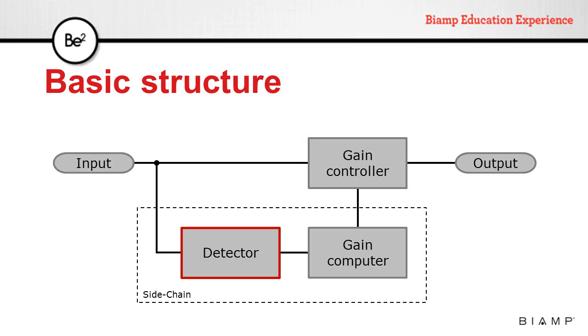This detector checks to see if the signal is valid to do any processing. Most of the time, we're just looking at volume. The gain computer is the one that decides what we're going to be doing with the level of the signal. This gain computer is the one that is going to be controlling the gain controller.